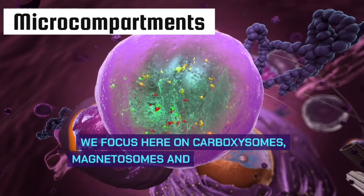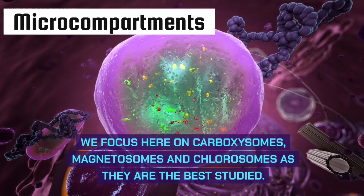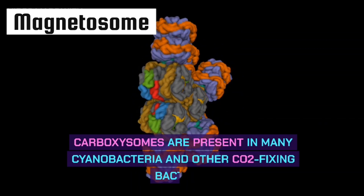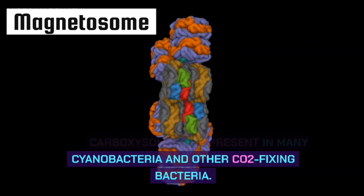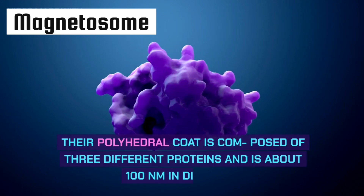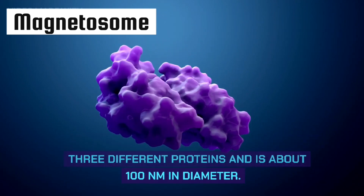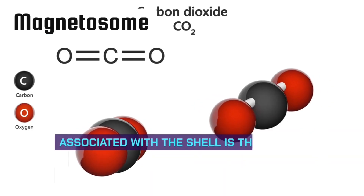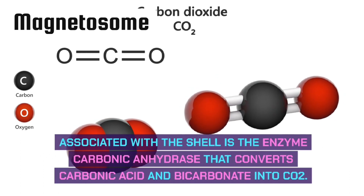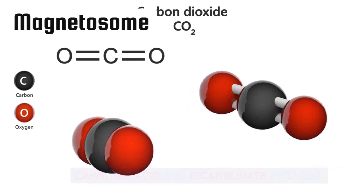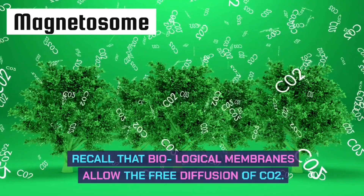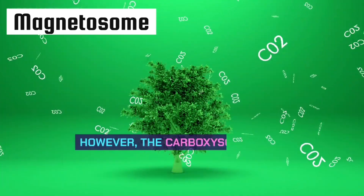We'll focus on carboxysomes, magnetosomes, and chlorosomes, which are best studied. Carboxysomes are present in many cyanobacteria and other CO2-fixing bacteria. Their polyhedral coat is composed of three different proteins and is about 100 nanometers in diameter. Associated with the shell is the enzyme carbonic anhydrase, which converts carbonic acid and bicarbonate into CO2.